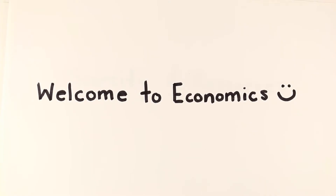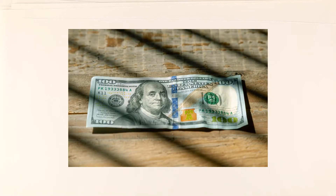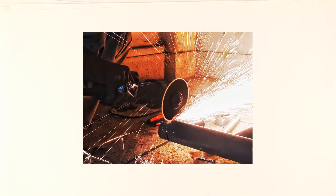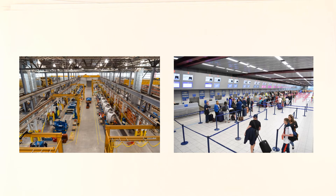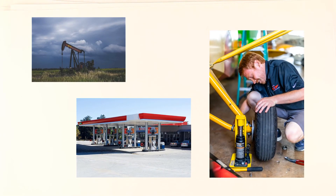Welcome to economics class. Today we are going to learn about scarcity and resources. The real wealth of the United States is not money — does that surprise you? Our nation's wealth is actually the resources we have and the goods and services we produce. Resources are what we use to produce goods and services. There are three basic types of resources.